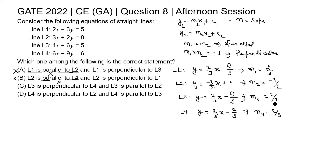Option C: L3 is perpendicular to L4. Here we can see the slopes of L3 and L4 are both 2/3, which are the same. So the lines are parallel to each other, not perpendicular. This statement is again wrong.